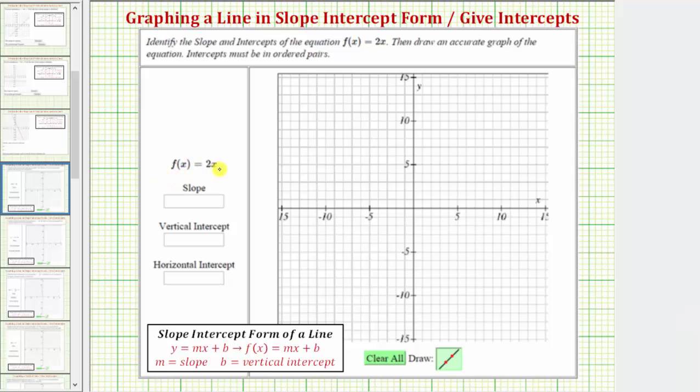We're given the linear function f of x equals 2x. We're asked to find the slope, as well as the vertical intercept and the horizontal intercept.